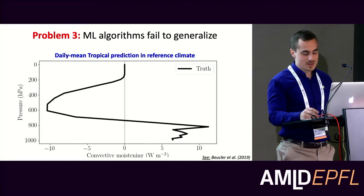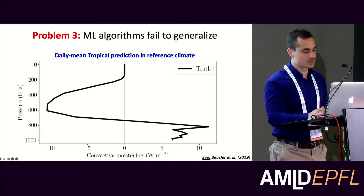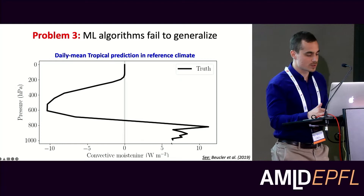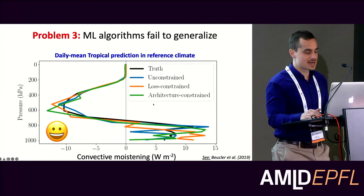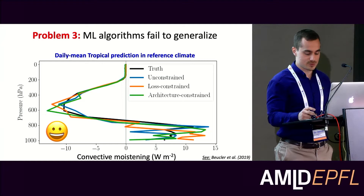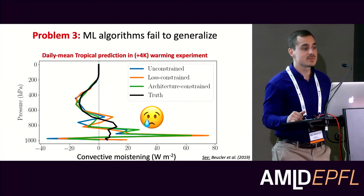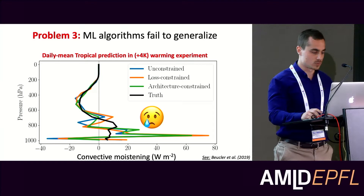The third problem is generalization ability. This is a typical daily mean prediction in the tropics — the neural network must learn how storms, clouds, and fine-scale turbulence redistribute water vapor in the vertical. Different neural networks, including ones engineered to conserve mass and energy, perform pretty well in the reference climate. But if I warm the climate by four Kelvin, they suddenly fail by quite a bit — they're unable to generalize to unseen thermodynamic conditions that come with global warming.